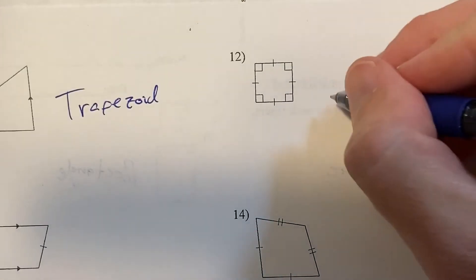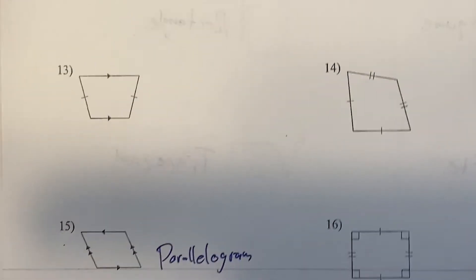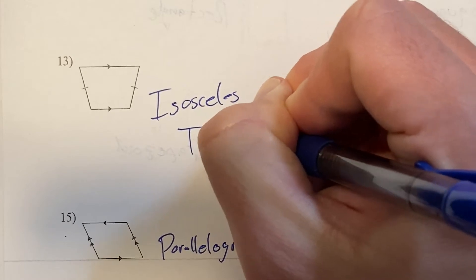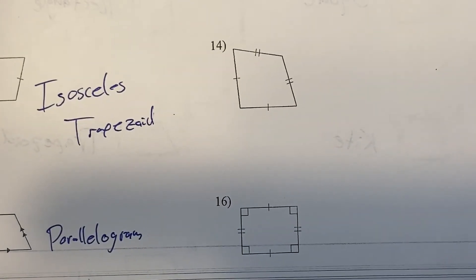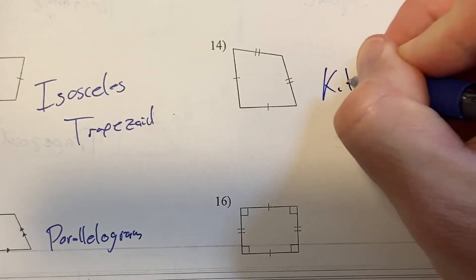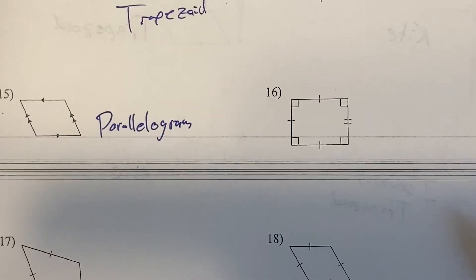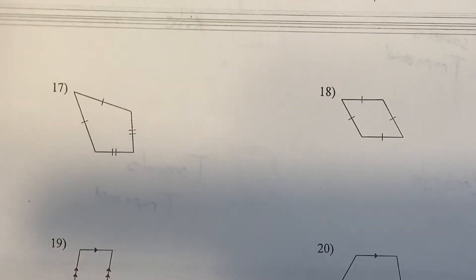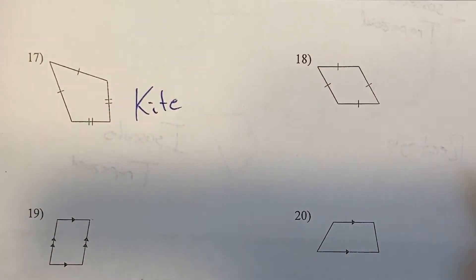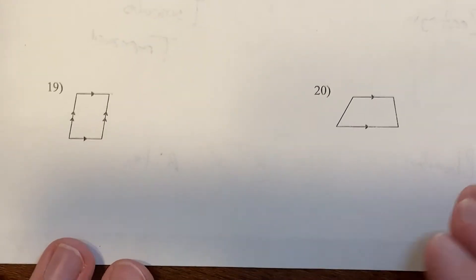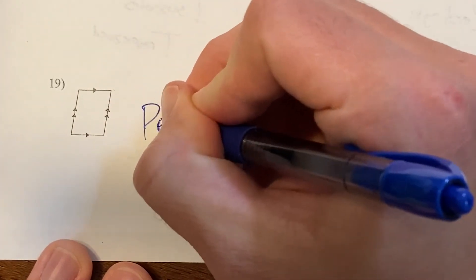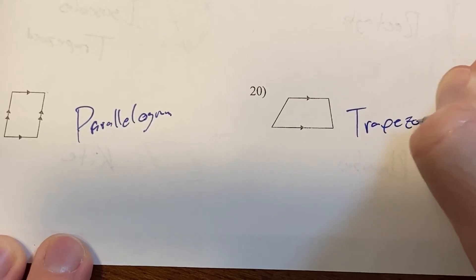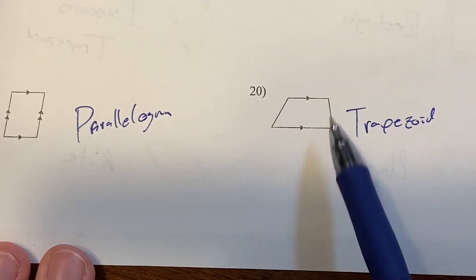Number 11 is a trapezoid. Number 12 is a square. Number 13 is an isosceles trapezoid. Number 14 is a kite — looks like a squished kite. I already said parallelogram on 15. Number 16 is a rectangle. Number 17 is a kite. Number 18 is a rhombus — all four sides are congruent. Number 19: two sets of parallel lines — parallelogram. Number 20 is just a trapezoid, not isosceles — if it were isosceles, those two legs would be marked.